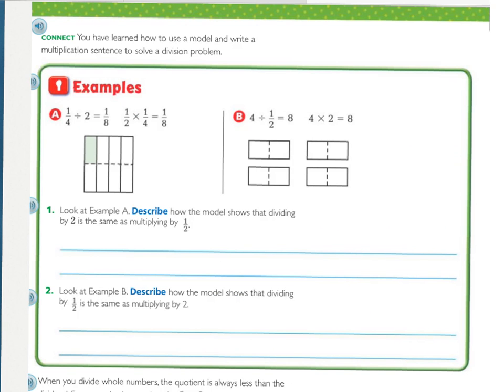So now that we've used models in previous lessons or diagrams, and then we've been working with multiplication sentences. So now we're going to look at these two examples. First, let's look at example A. 1/4 divided by 2 equals 1/8. We can see that. We had 1, it's 4, and then we divided it into 2's. And 1 piece of that was 1/8. We can also see that 1/2 times 1/4 is 1/8.